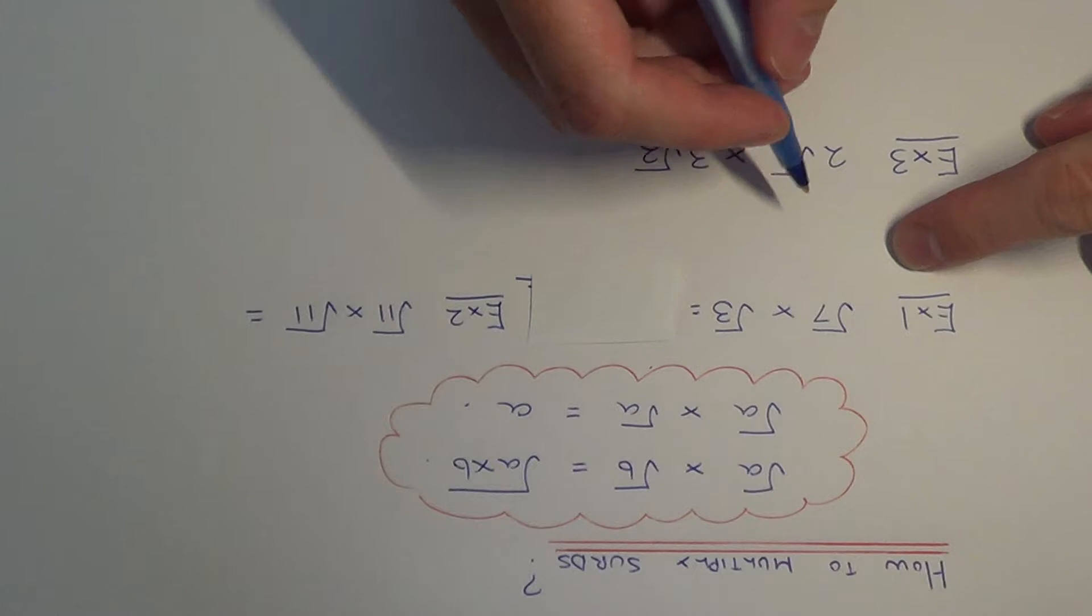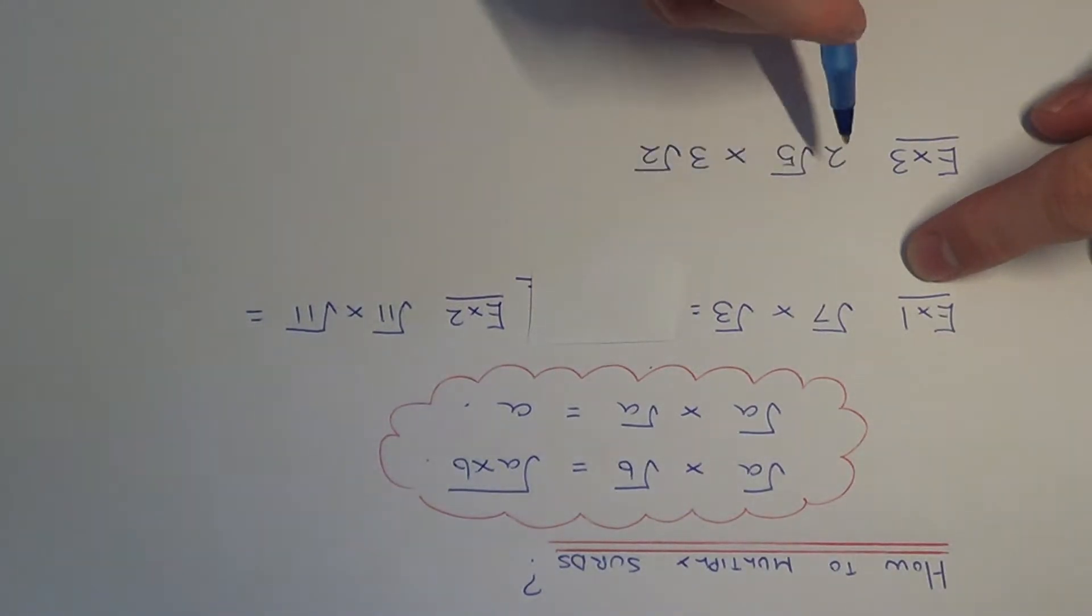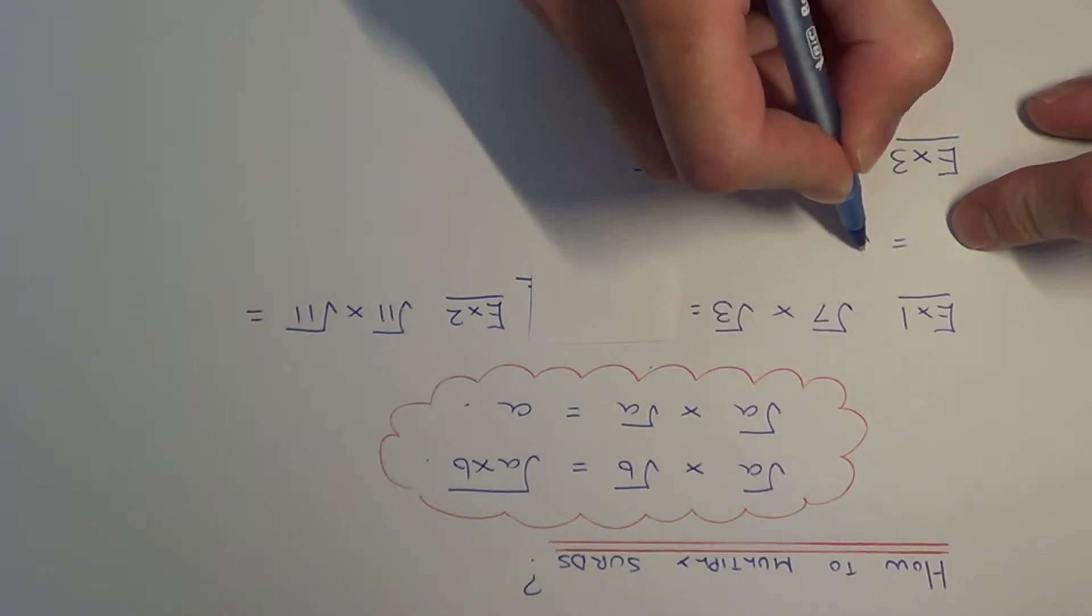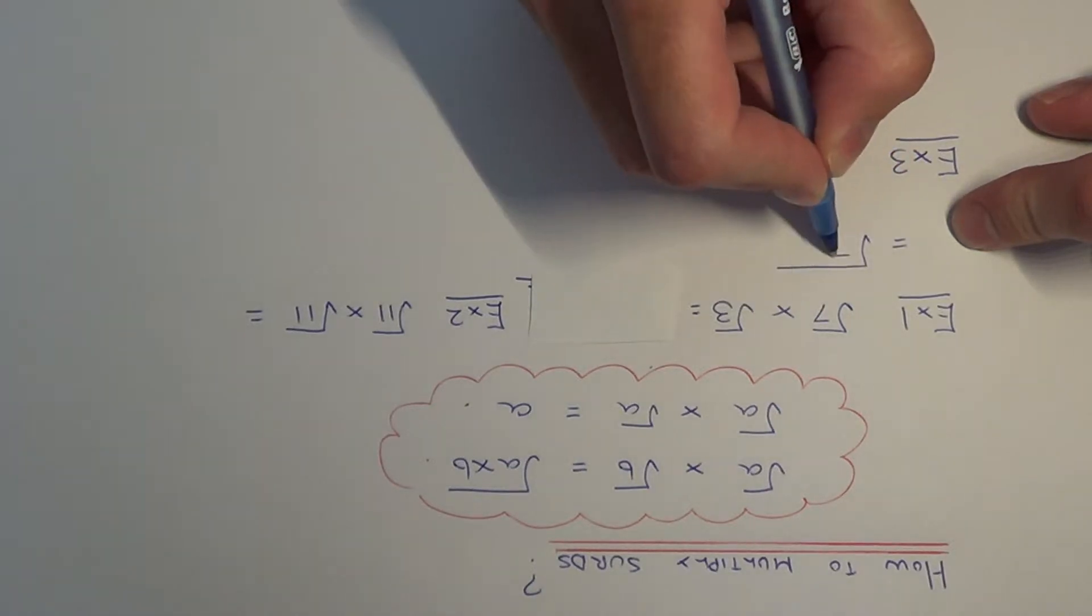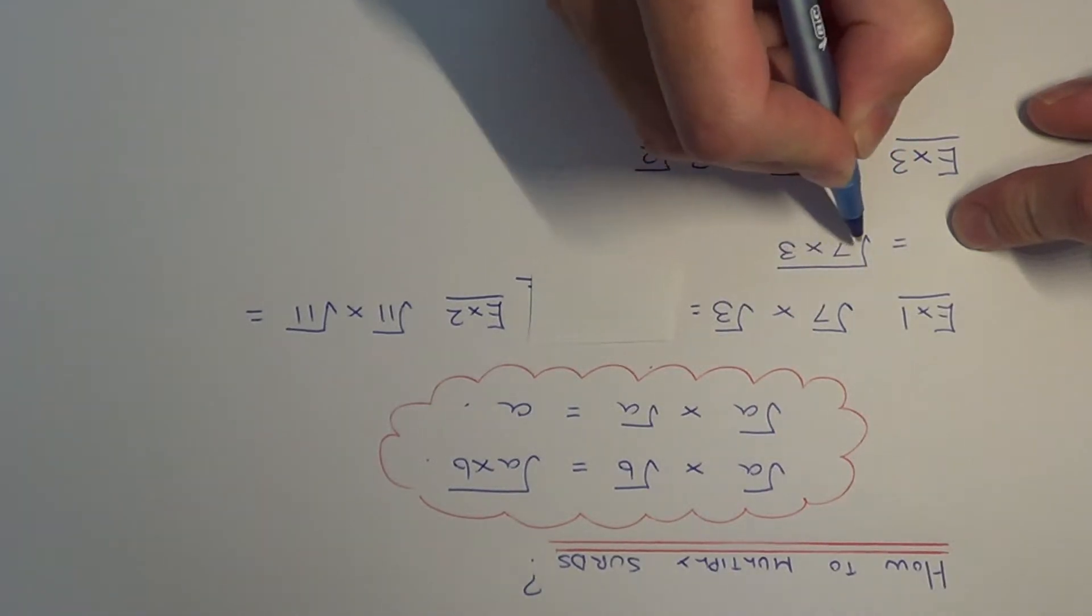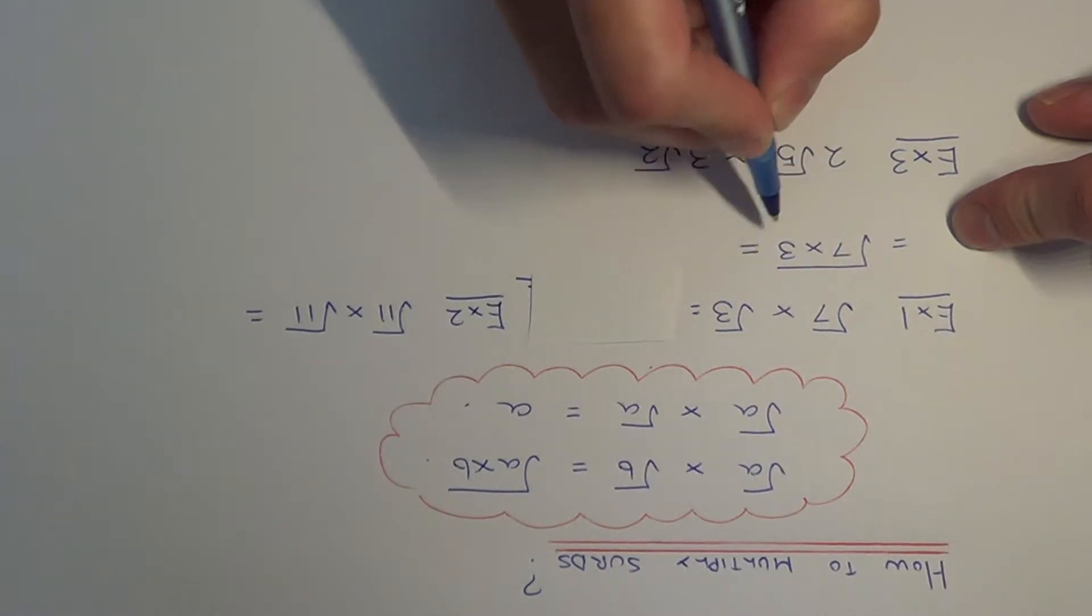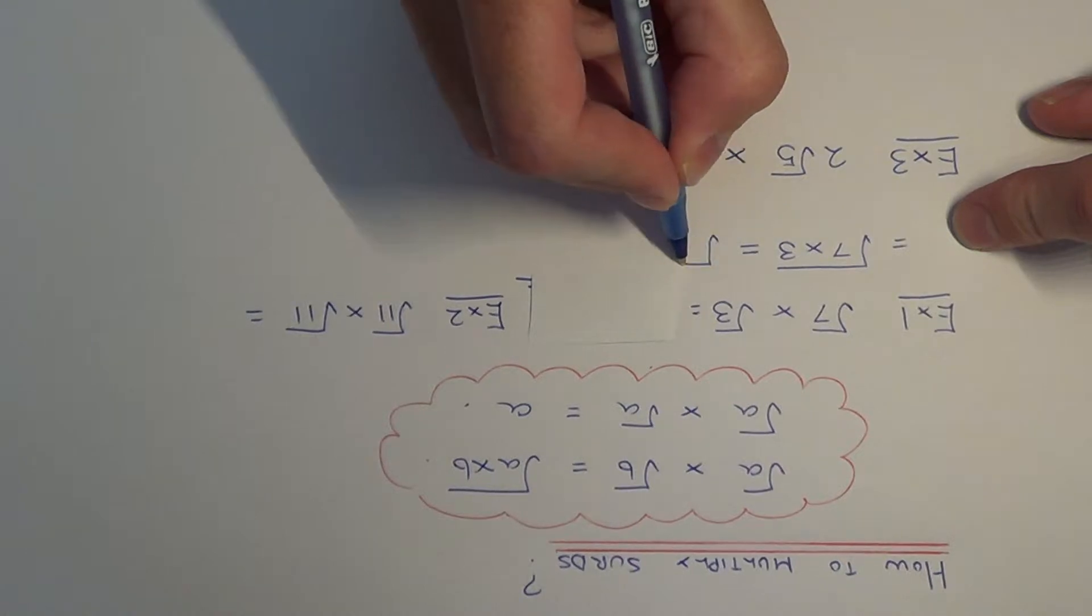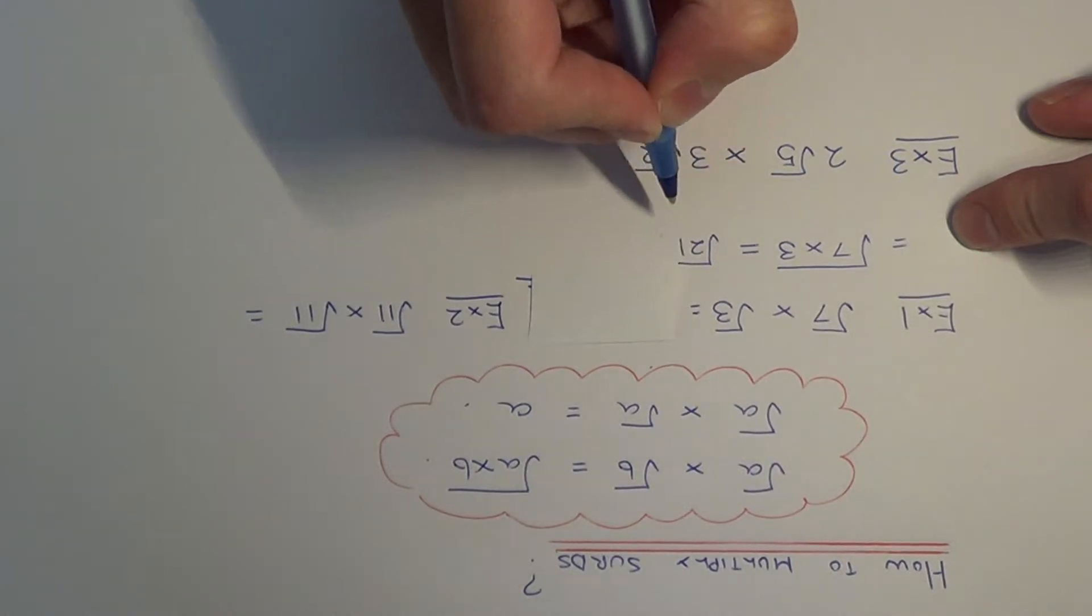Let's apply these rules to the examples. First, we've got root seven times root three. We need to multiply the numbers underneath the roots together, so that's root seven times three. Seven times three is twenty-one, so our final answer is root twenty-one.